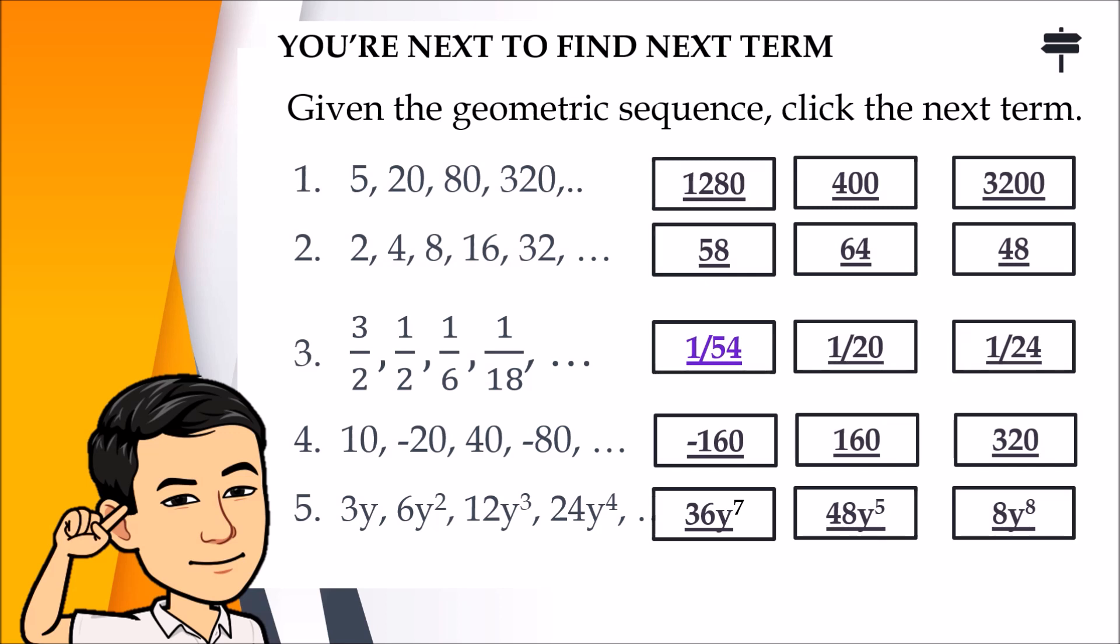From number 1: 5, 20, 80, 320. The common ratio here is 4, because 20 over 5 is 4. Multiply that 4 to the 320, you will have 1,280. So the next term in the sequence for number 1 is 1,280.